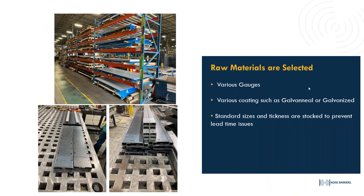For raw materials, we primarily use 12-gauge steel for windows. Blast-resistant windows may require additional blast material ordered separately. We typically use galvannealed material as our common window material; if moisture or water exposure is a factor, we use galvanized material to prevent rust on the window frame. Standard sizes and thicknesses are stocked to prevent lead time issues. For windows under eight feet, we keep material in-house to accommodate two, three, four, six, and eight-foot windows.